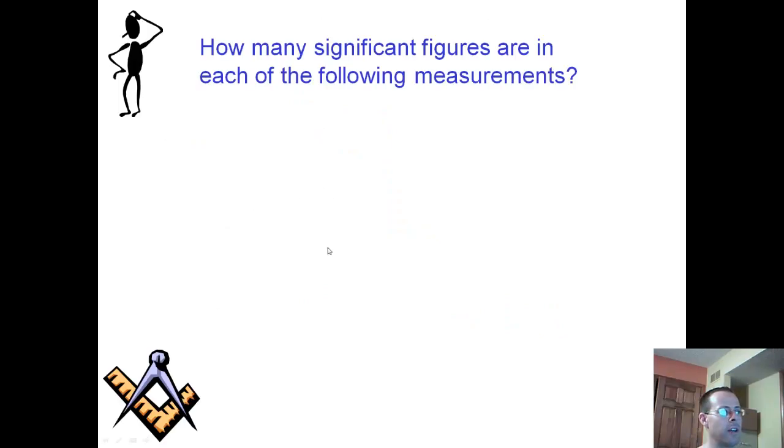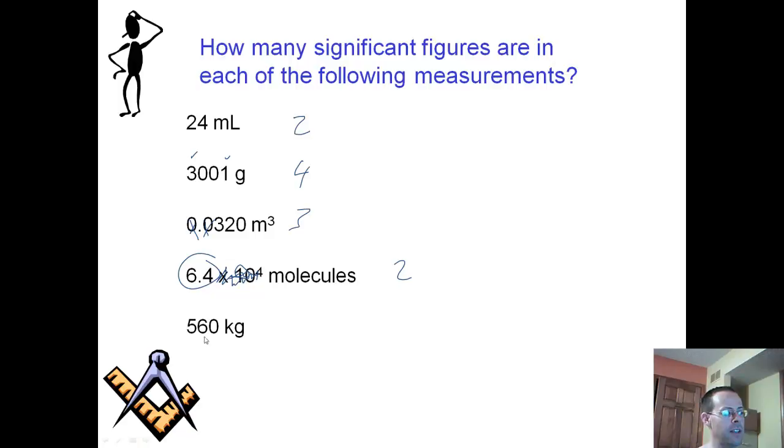We're going to do a little bit of practice. How many sig figs are in each of the following measurements? First one, 24 milliliters. There's no zeros, so two. Next, 3001 grams. Significant, significant, and I have two sandwich zeros between my bread, so four sig figs. Next, I've got a really small number with leading zeros which are never significant, and a trailing zero after a decimal. So all those that are left are significant and we have three. Then here, 6.4 times 10 to the fourth molecules. Really, our measurement is this portion only, the number between 1 and 10. We have two non-zeros and two sig figs. Lastly, 560 kilograms. Significant, significant. We have a trailing number. Is it after a decimal? It is not, so not significant. We are back to 2.